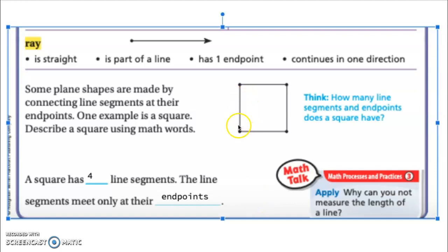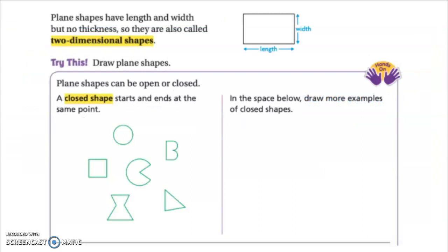It's another way to say that a square has four sides and the line segments meet at their corners. But using new math vocabulary as a smart third grader, you're going to be saying they have four line segments and the line segments meet at their endpoints. Plane shapes have lengths and widths but no thickness, so they're called two-dimensional, meaning they lay flat on a surface. These are things that you draw.